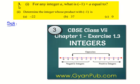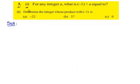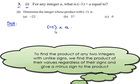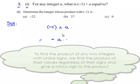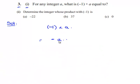We'll see the third problem. In the first bit, given negative 1 into a: first we multiply their values regardless of their signs, that is 1 into a gives a. When we multiply two integers of different signs we get a negative sign, that is negative 1 into a gives negative a. Therefore, negative 1 into a equals negative a.